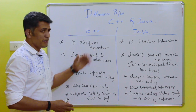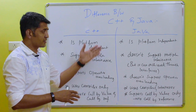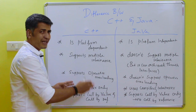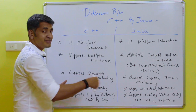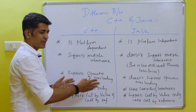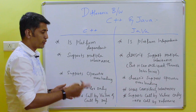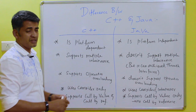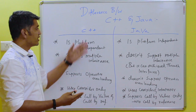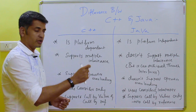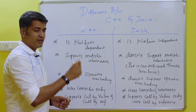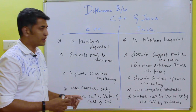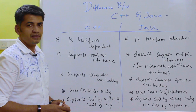Both C++ and Java support threading, but C++ does not have a built-in thread library and relies on third-party thread libraries, whereas Java has a built-in thread library. C++ supports structures and unions but Java does not. Additionally, C++ does not support documentation comments, but Java does support documentation comments. These are the major differences between C++ and Java. Thank you.